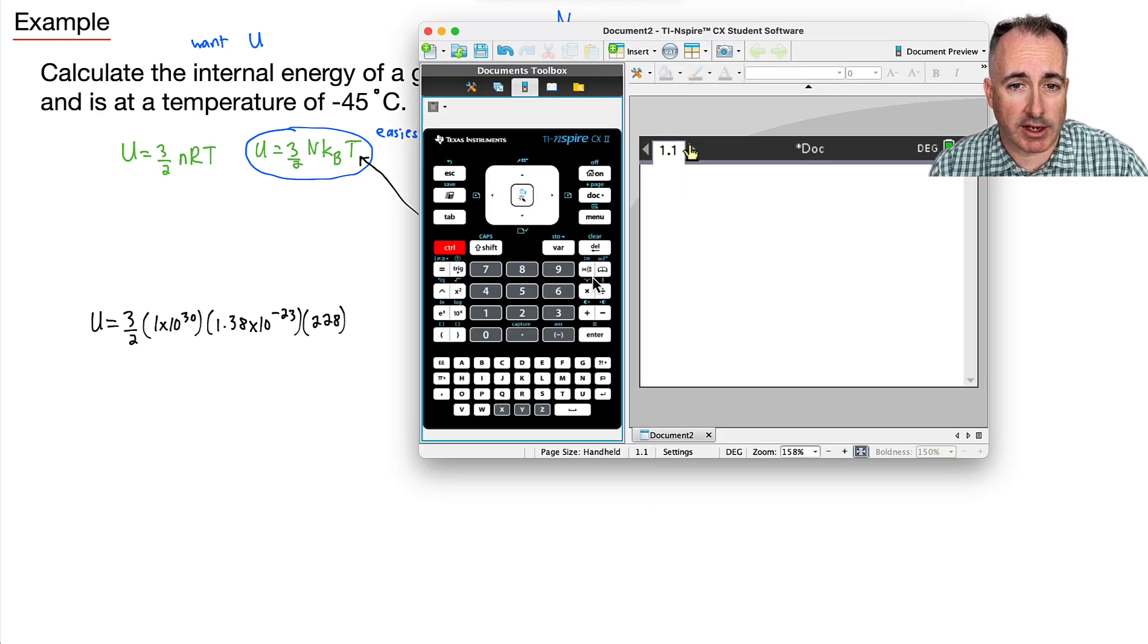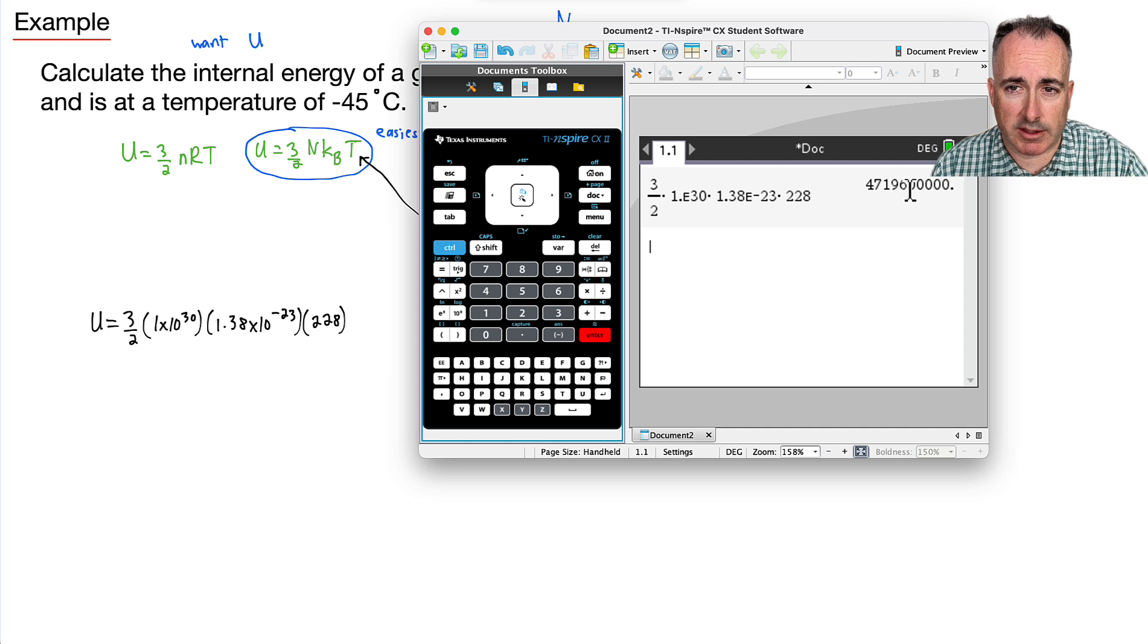Okay, so I'll just do a fraction, for example. So I'll do 3 over 2. All that times, let's see, it's 1 times 10 to the 30. All that times 1.38 times 10 to the minus 23. And all that times 228. Now, my final answer then is 4,719,600,000.